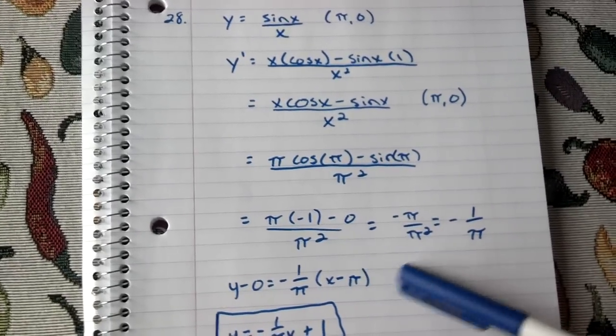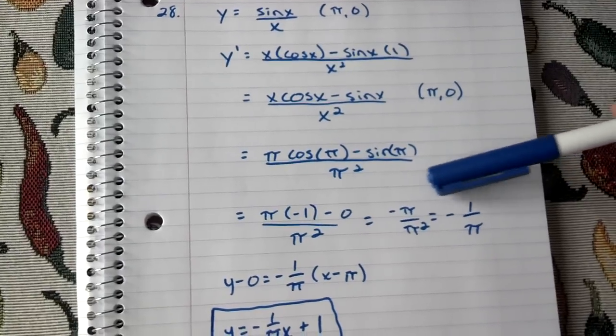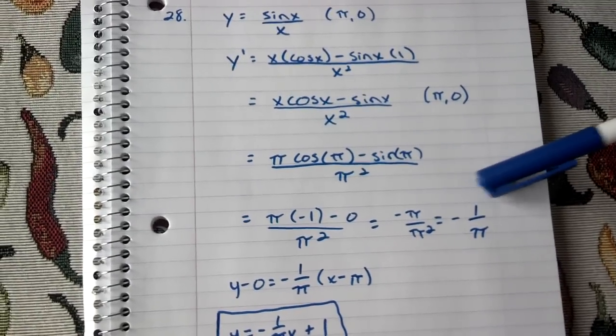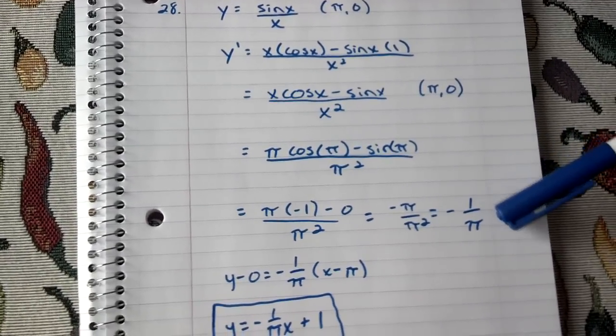Once you solve that problem out, you get negative pi over pi squared. You can factor out a pi term, which gives you negative 1 over pi.